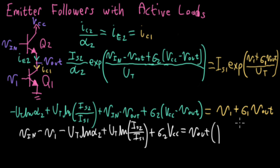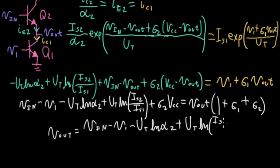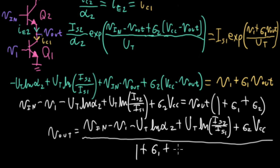And on the right, I'll have Vout because I have a minus sign here that turns into a plus when I move it over here. I'll write Vout times 1, that gives me this term here. And then I have a sigma1 over on the right already, and then I'll have a sigma2 on the right. So I could say that Vout is equal to all this junk VN minus V1 minus UT log alpha2 plus UT log IS2 over IS1 plus sigma2 VCC, and this is all over 1 plus sigma1 plus sigma2.